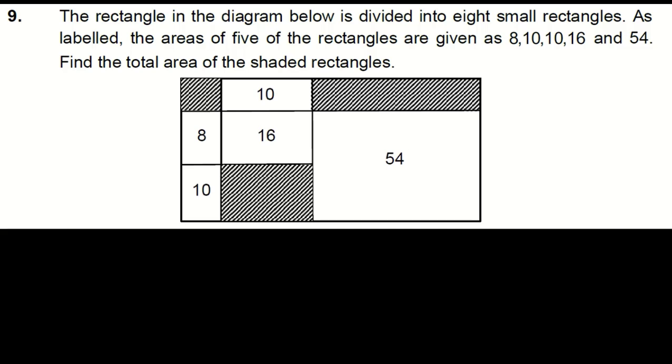Moving on to question 9. A rectangle in the given diagram is divided into 9 smaller rectangles. 5 of these rectangles have their areas labelled as 8, 10, 10, 16 and 54. We aim to find the total area of the shaded rectangles using 2 methods.